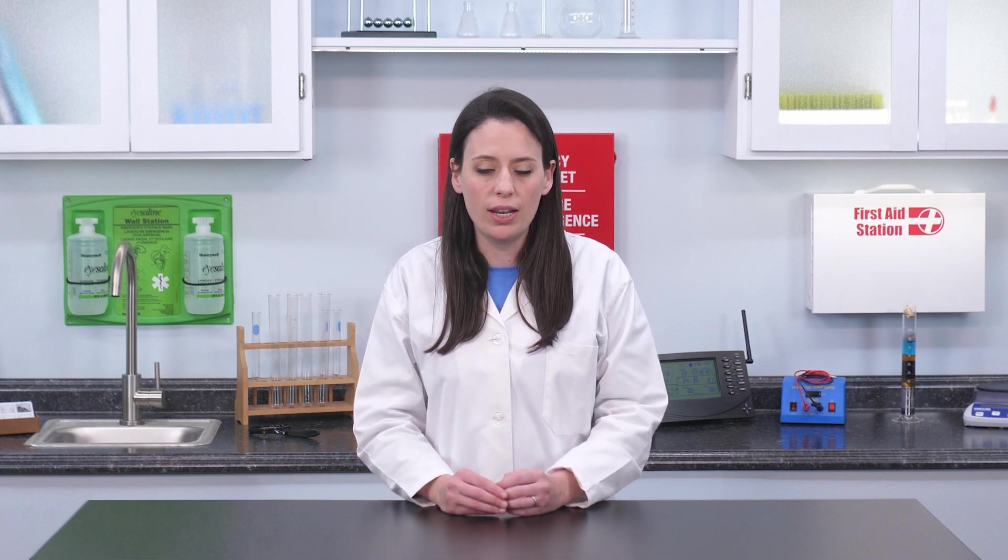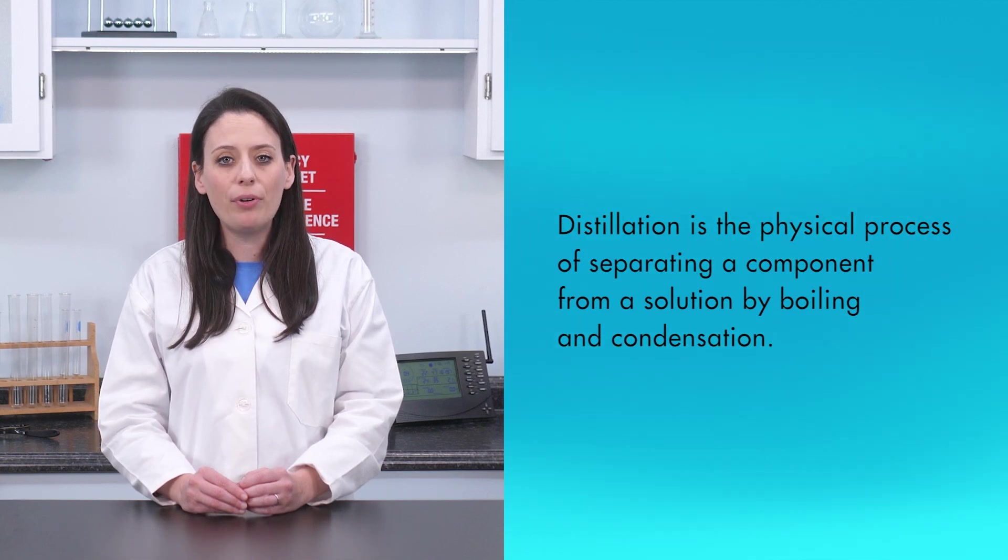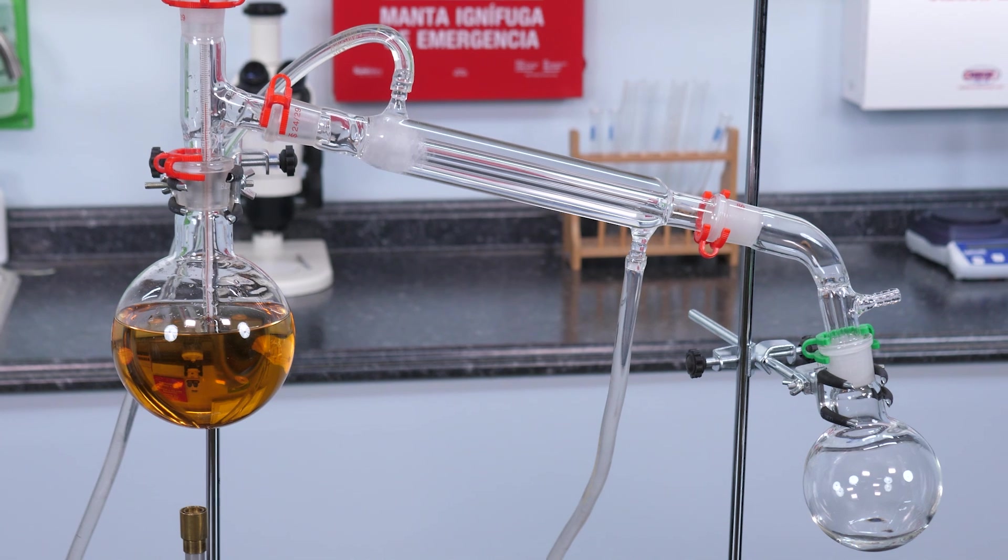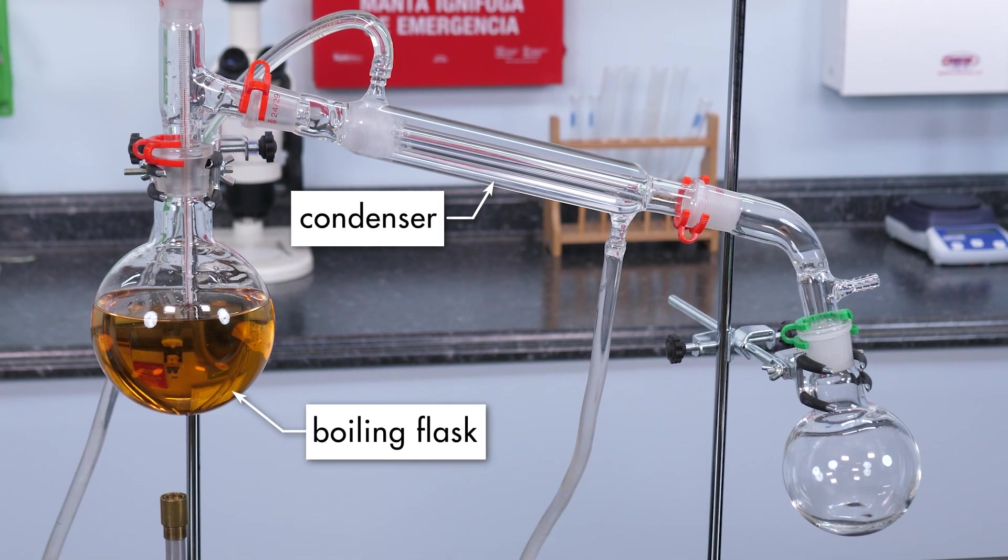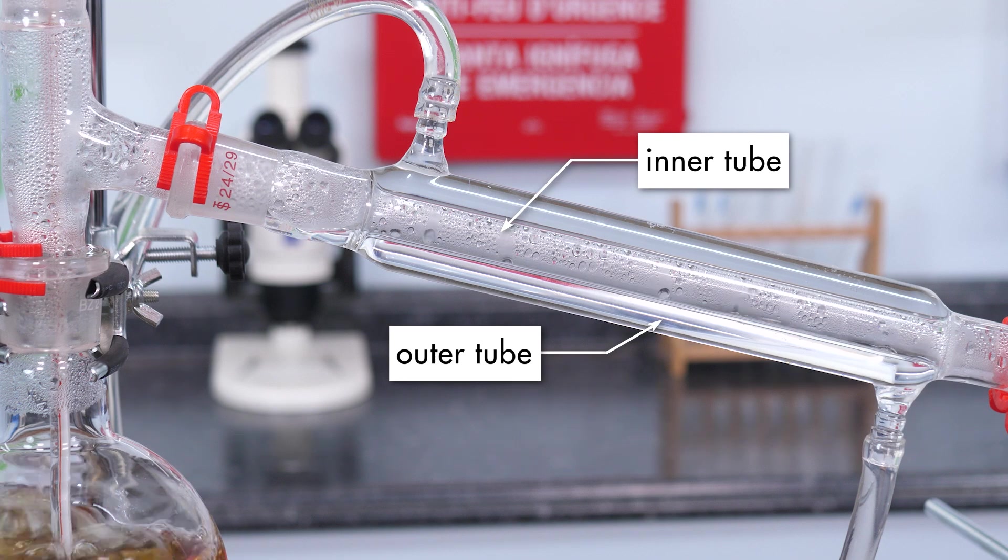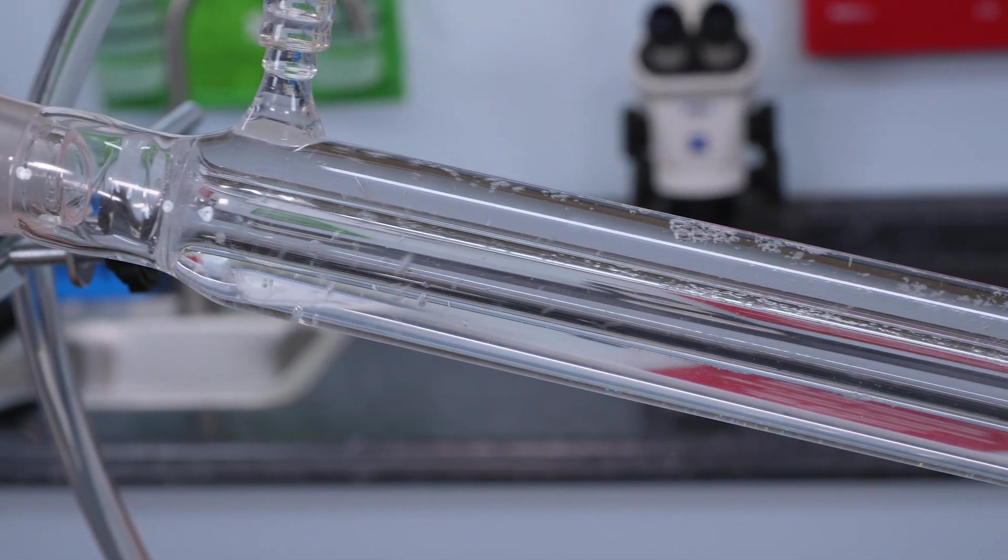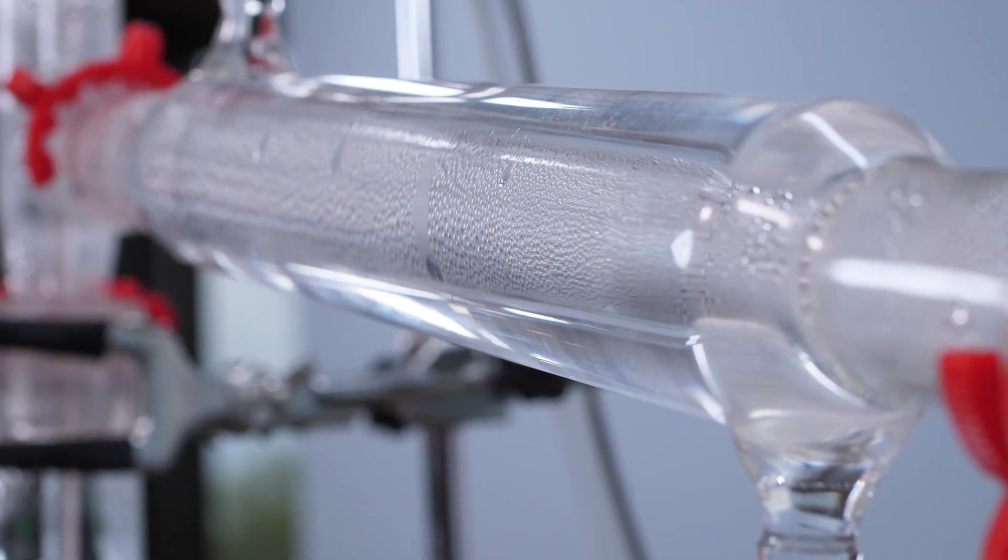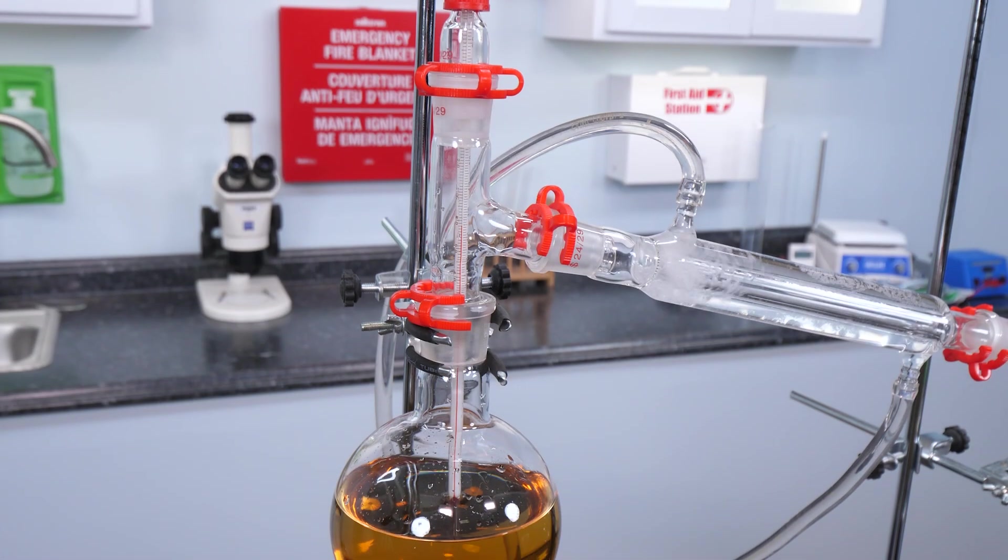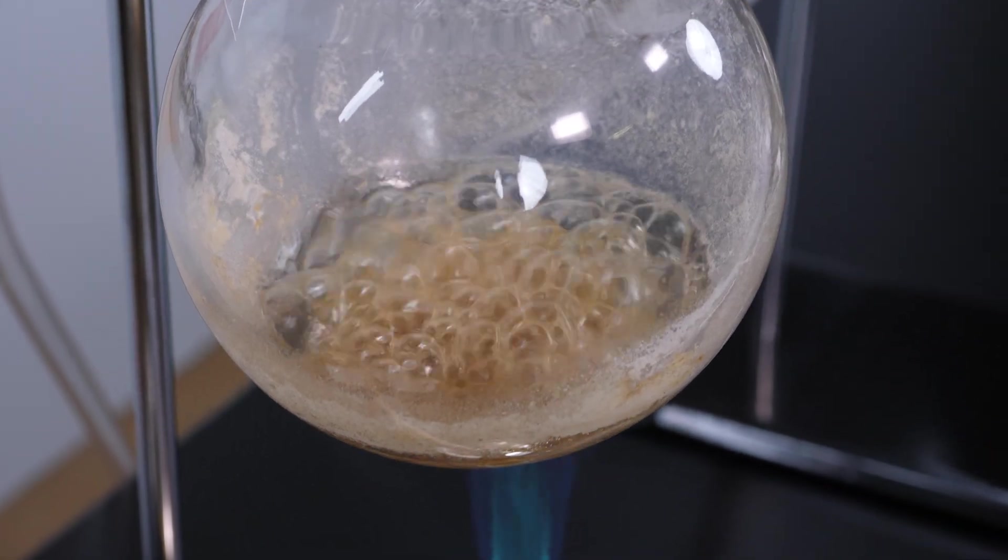To separate the components of a solution, we use the process we referenced earlier called distillation. Distillation is the physical process of separating a component from a solution by boiling and condensation. Distillation requires three parts: a boiling flask in which to boil the solvent, a condenser to cool the gaseous solvent, and a collection flask to collect the condensed solvent. The condenser consists of an inner tube and an outer tube. Steam from the boiling flask passes into the inner tube. Cool water circulates in and out of the outer tube. The cool water in the outer tube causes the steam to condense to a liquid again. The condensed water is collected in the collection flask. After the water is removed from the solution, the salt remains in the boiling flask.